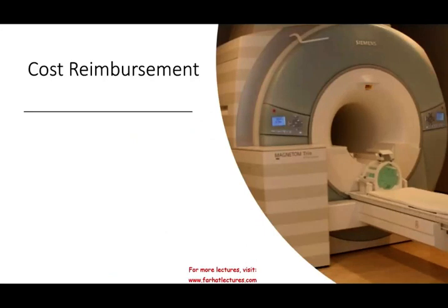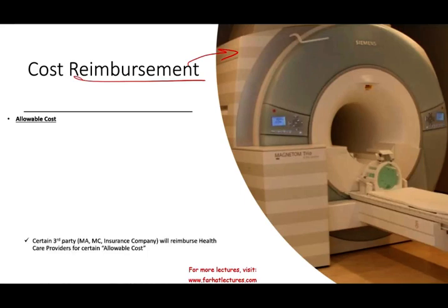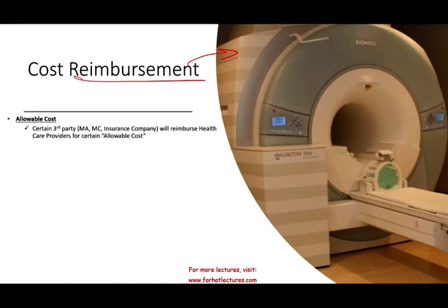Cost reimbursement — what is it? Cost reimbursement is basically when a third party pays the health care provider money for reimbursement. What type of reimbursement? Maybe reimbursement for equipment, computers, fixed assets, and so on. So allowable costs are certain third parties, such as Medicare or an insurance company, that would reimburse a health care provider for certain costs. And those costs are not typically billed to patients.